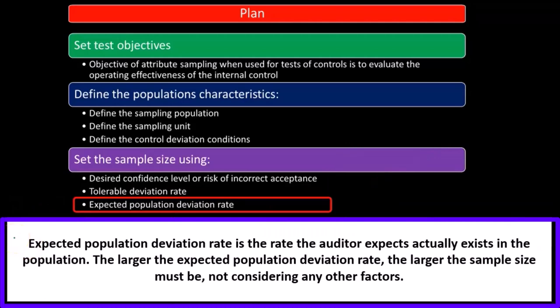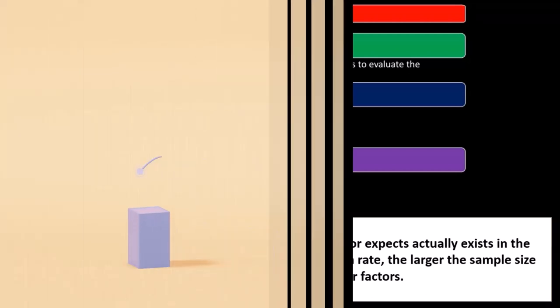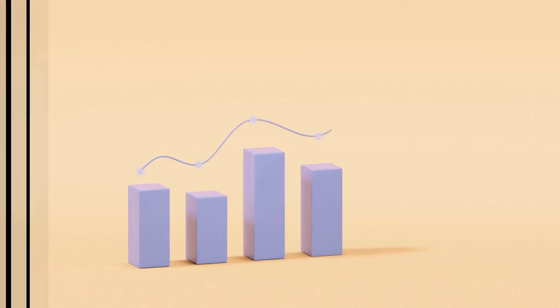The expected population deviation rate is the rate the auditor expects actually exists in the population. The larger the expected population deviation, the larger the sample size must be. So if we consider there's going to be a larger deviation, we would want to increase the sample size because there's going to be more risk.